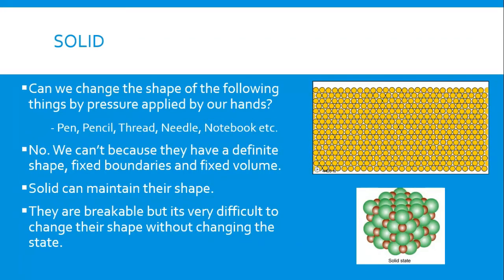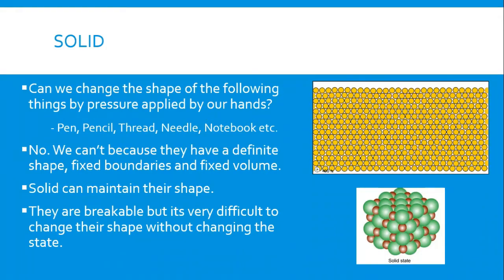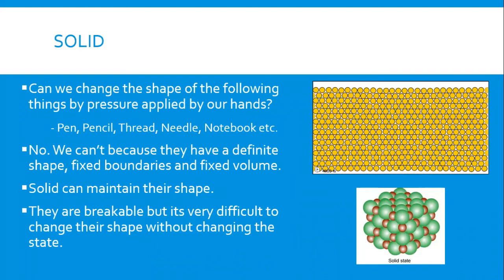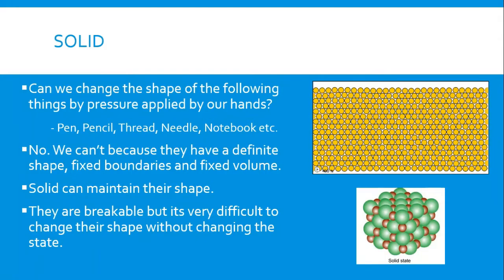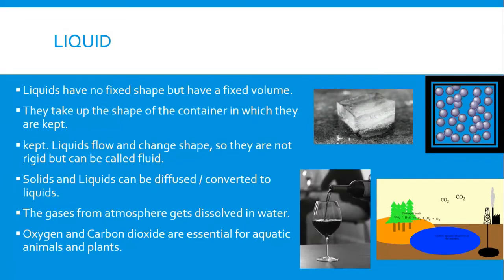Solids are breakable, but it is very difficult to change their shape without changing their state. For example, a needle can be changed into other things by melting it, but without changing it from solid to liquid, we cannot change its shape. To change the shape of a solid thing, we have to change its state.